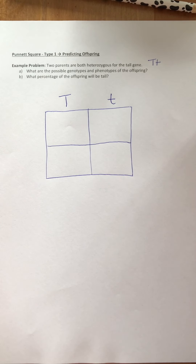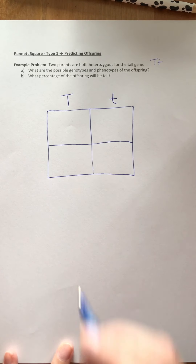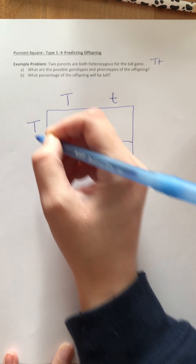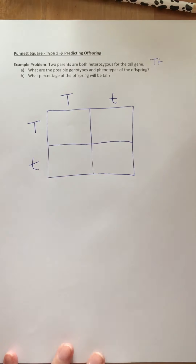Parent two we're going to put along the side, again putting one allele per box. Heterozygous again, so capital T in the first box and lowercase t in the second box.